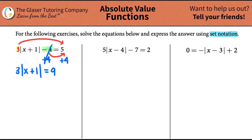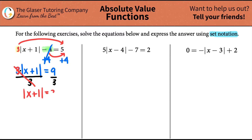The end of the game is we want to get x equals — it's still being trapped inside this absolute value, and I have a three on the outside. I have to do the opposite of what's being done. This is being multiplied by three, so in order to get rid of it, I must divide by three on both sides. These cancel, and I now get the absolute value of x plus one equals nine divided by three, which is three.